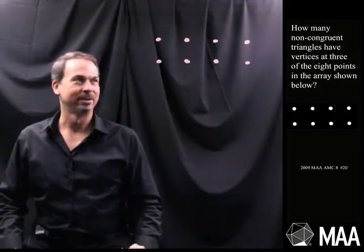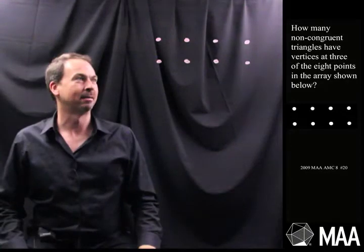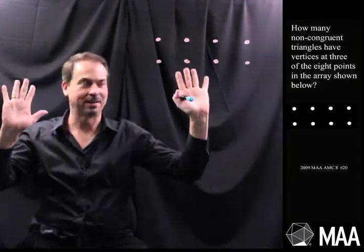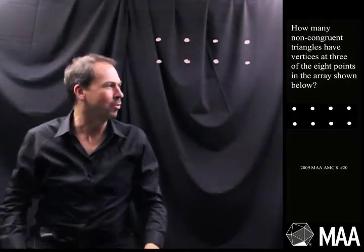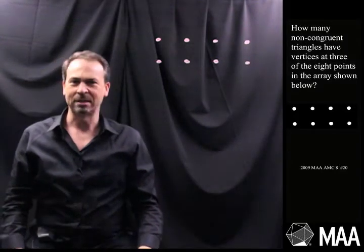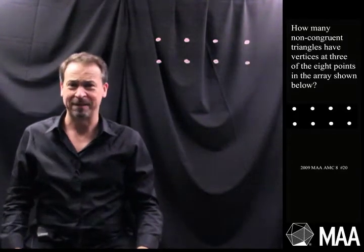Alright, so we want to draw triangles on this thing. Each corner of the triangle is on a dot. That makes sense. And we want to know how many non-congruent triangles we can draw. Well, I guess the first thing to do with this problem is just draw a triangle, get a feel for it.